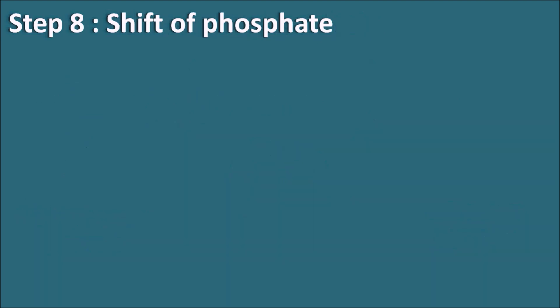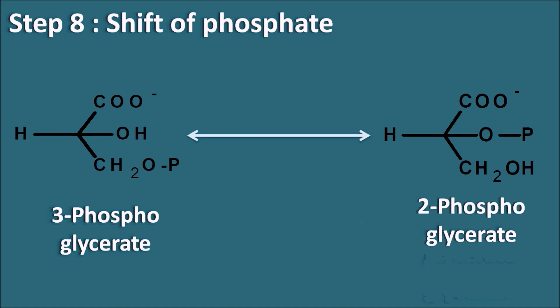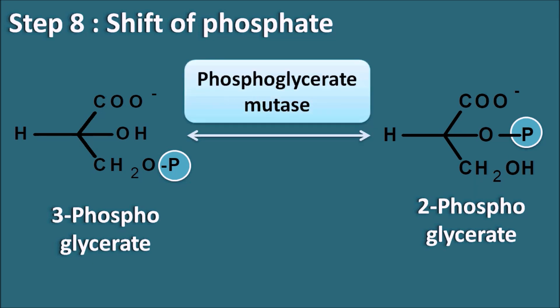Step 8 is the shift of the phosphate. We need to remove the OH group from the third carbon, but the phosphate group is currently attached at the third position — so it must first be moved. In this reaction, 3-phosphoglycerate is converted into 2-phosphoglycerate, shifting the phosphorus group from the third to the second position. Since this involves mutation of the phosphate group, the enzyme is phosphoglycerate mutase. Now the OH group at the third position is ready to be removed.